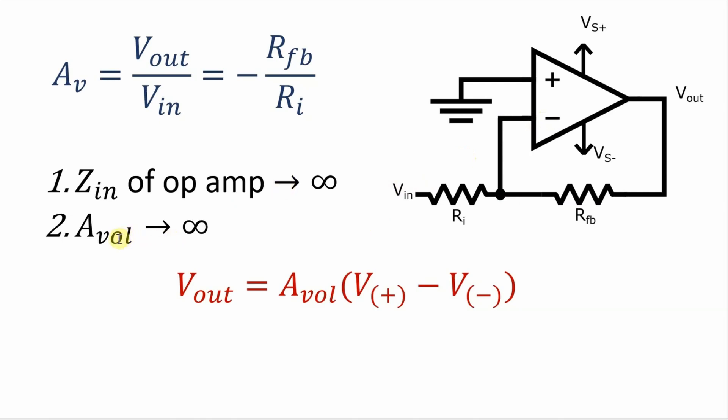The consequence of this second point is perhaps less obvious but consider what happens if you multiply a number approaching infinity as the open loop voltage gain is by a non-zero value. Then that result will also be approaching infinity.